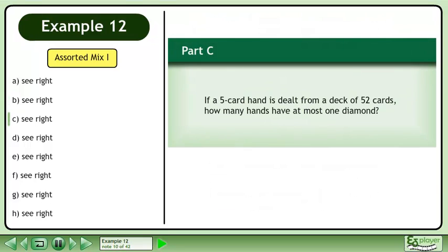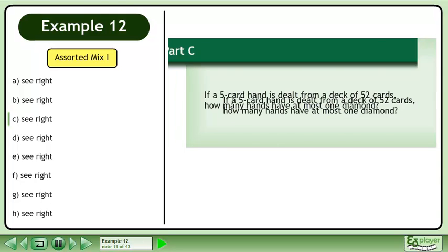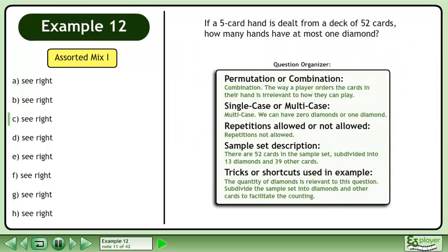Now we'll move on to Part C. If a five card hand is dealt from a deck of 52 cards, how many hands have at most one diamond? Pause the video and organize the information about this question.